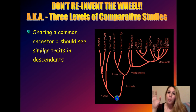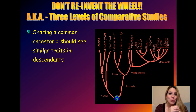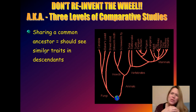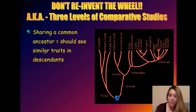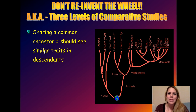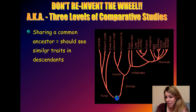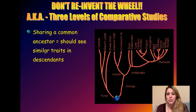There's so much evidence all around you. Darwin recognized this — he said all you have to do is open your eyes and look out at nature and you will see signs of evolution. So let's take a look at three common levels of comparative studies among organisms that tend to show evidence for macroevolution.